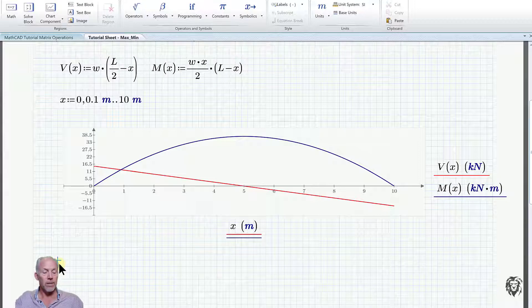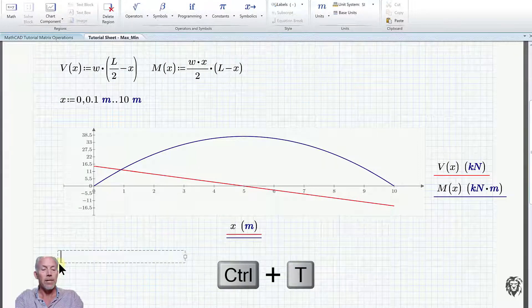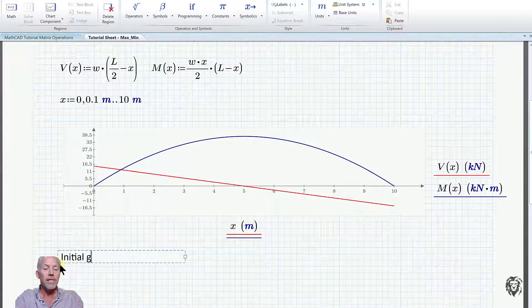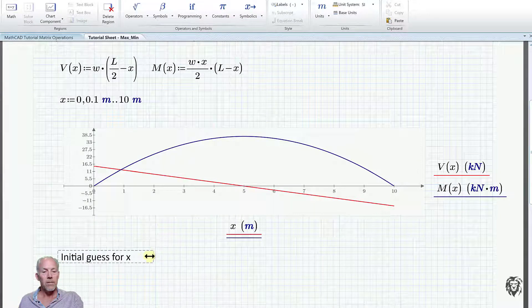So we're going to start off, we'll label this. We'll just control T, put in a text box. We're going to start with an initial guess value for X. And we'll just close that down.